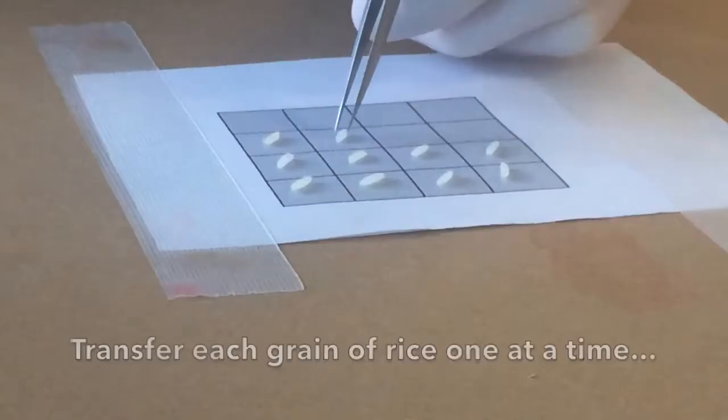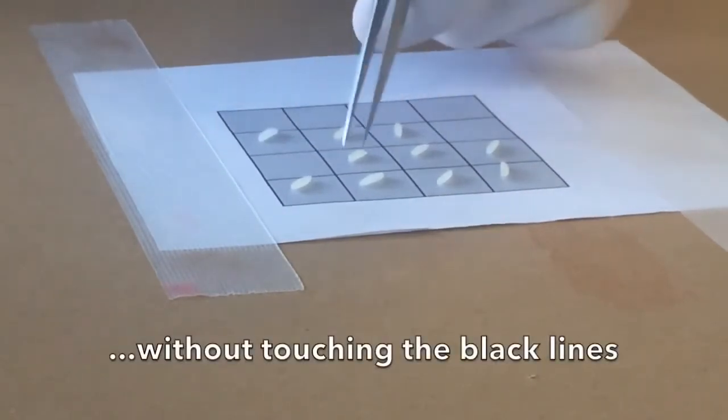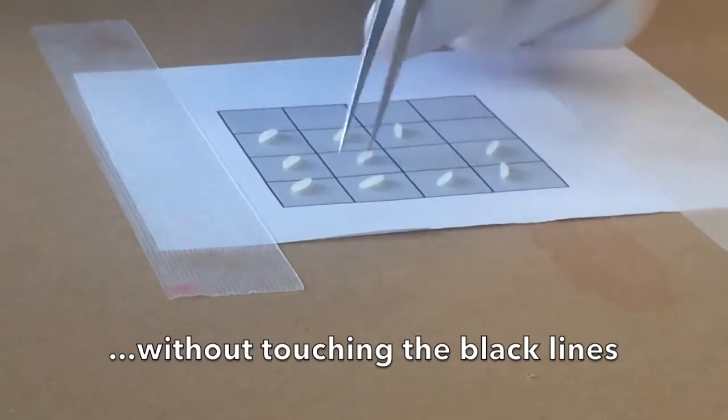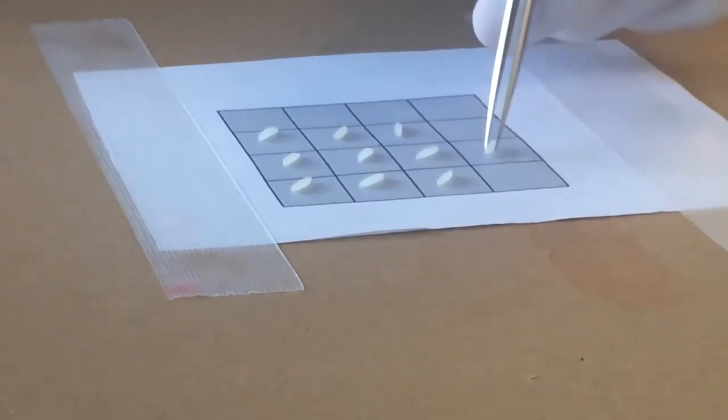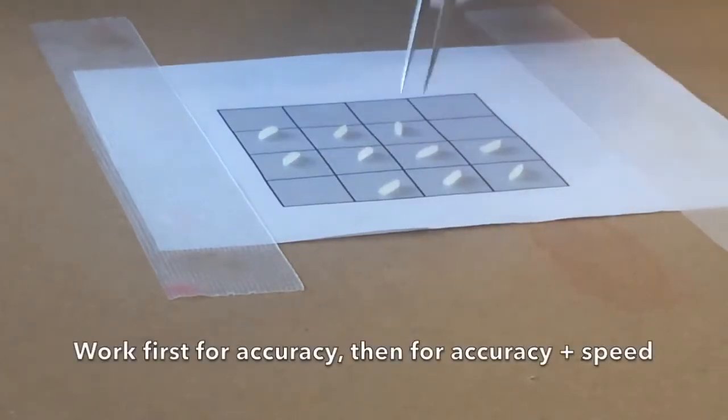The fifth model is the rice transfer exercise. Transfer each grain of rice one at a time without touching the black. This exercise tests dexterity with the micro forceps. As before, work first for accuracy then accuracy plus speed.